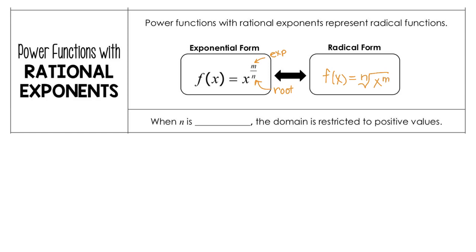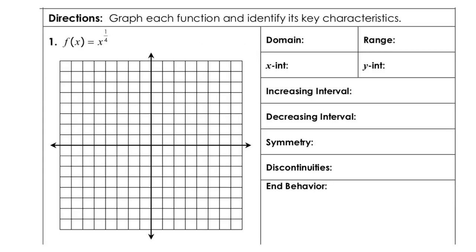Something to remember is when n is even, the domain will be restricted to just positive values. For number 1, we have x to the 1/4 power, and that is going to mimic y equals x to the 1/2 power, which is our square root function. So this will also look like the 4th root of x.